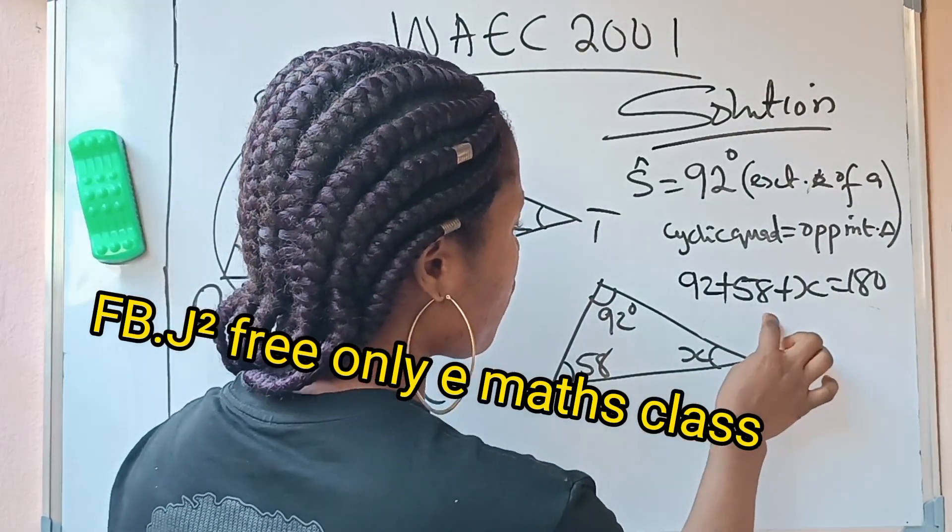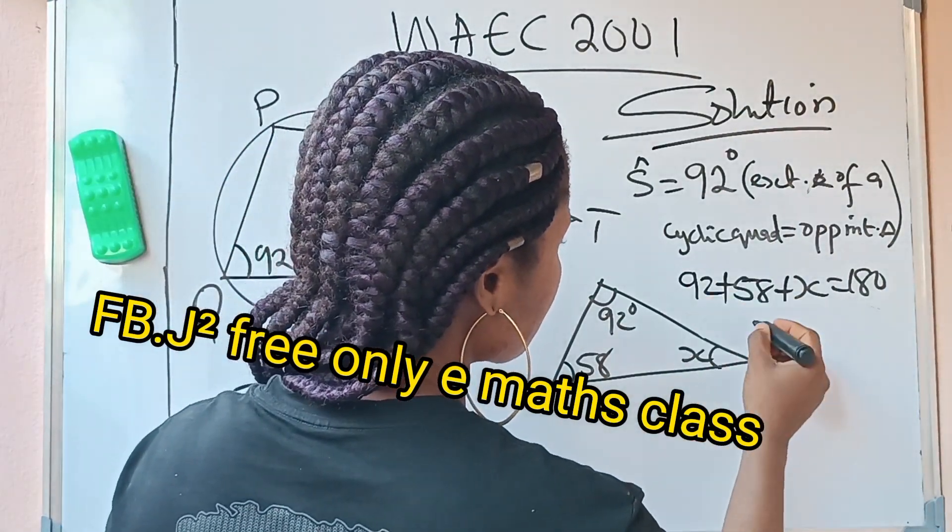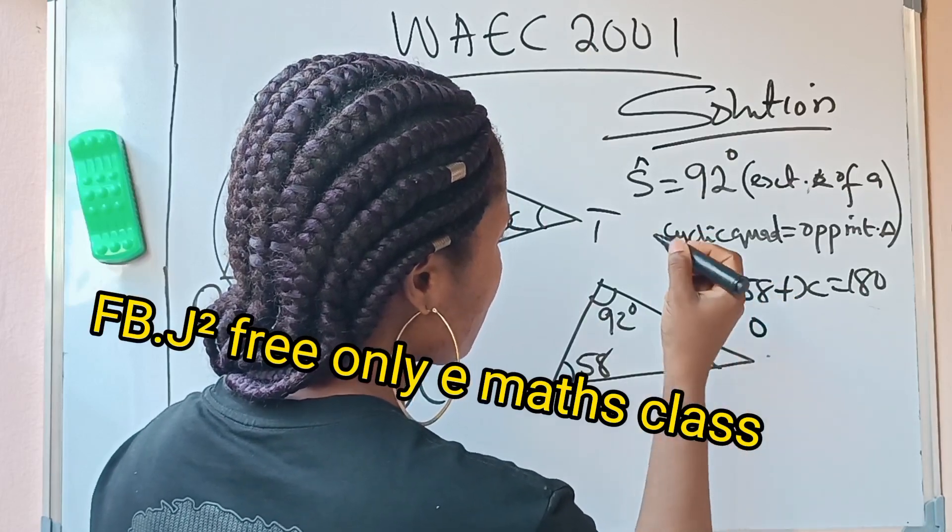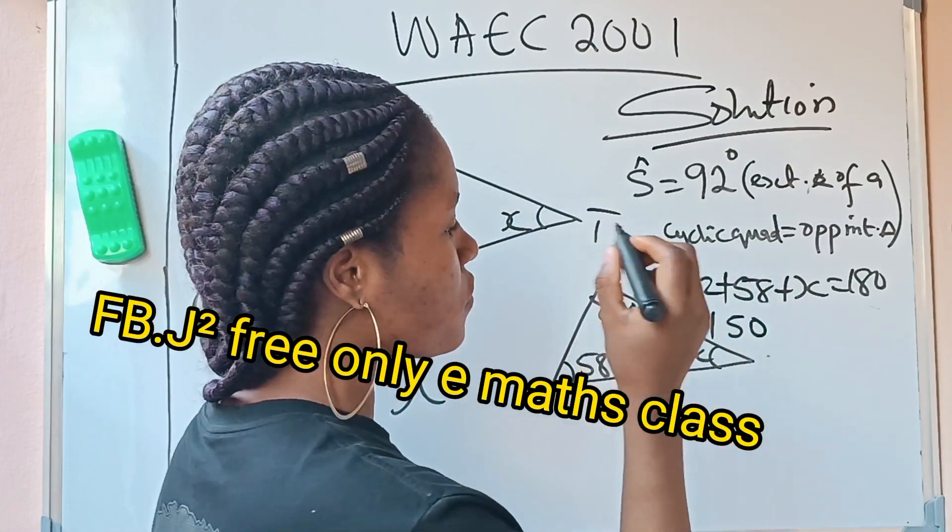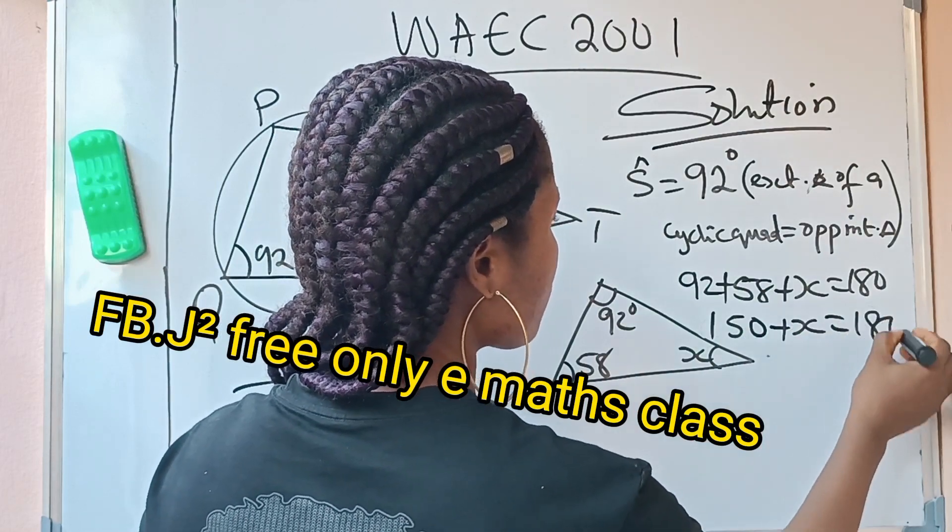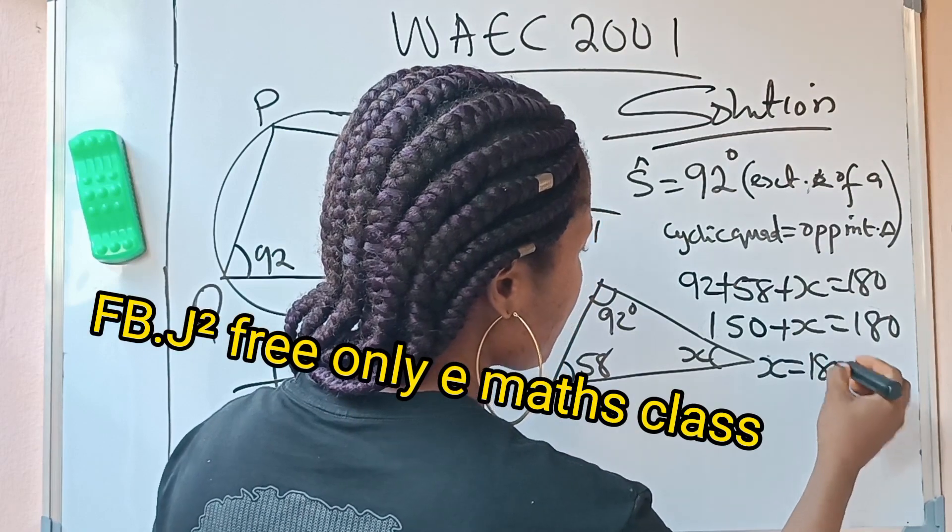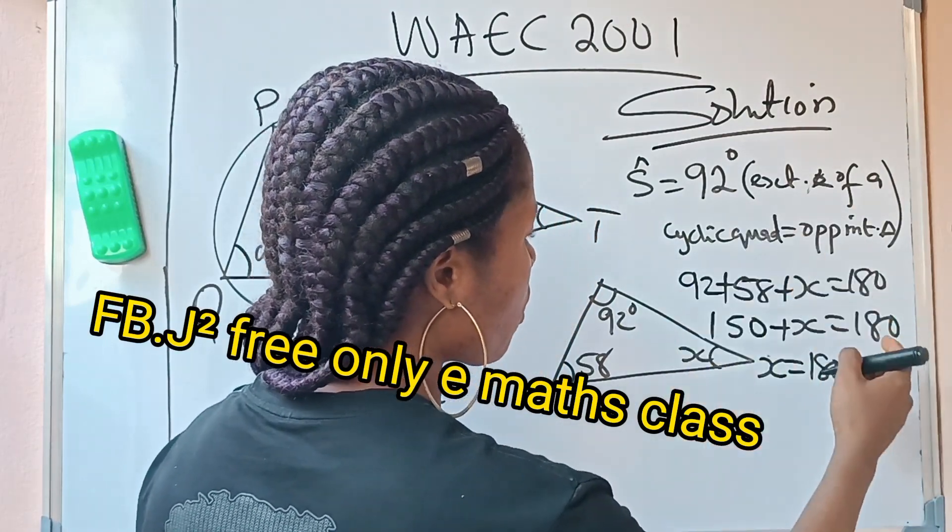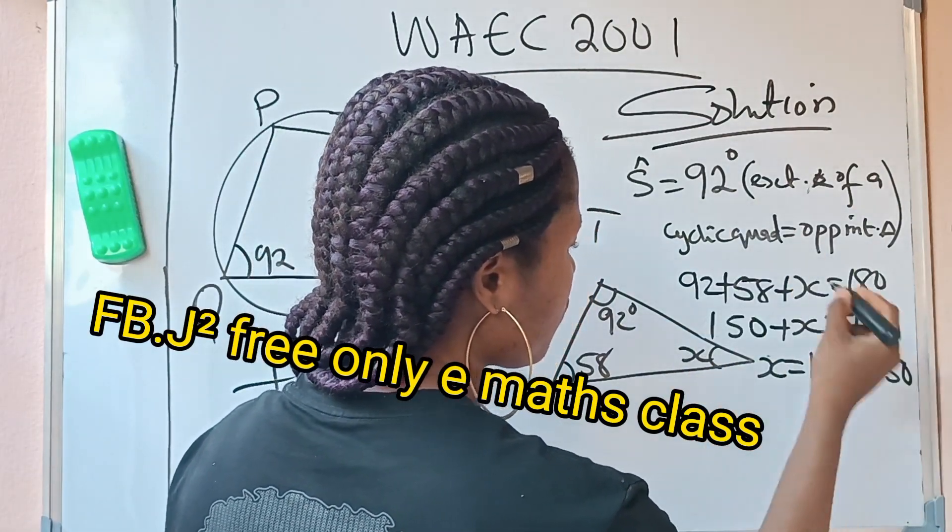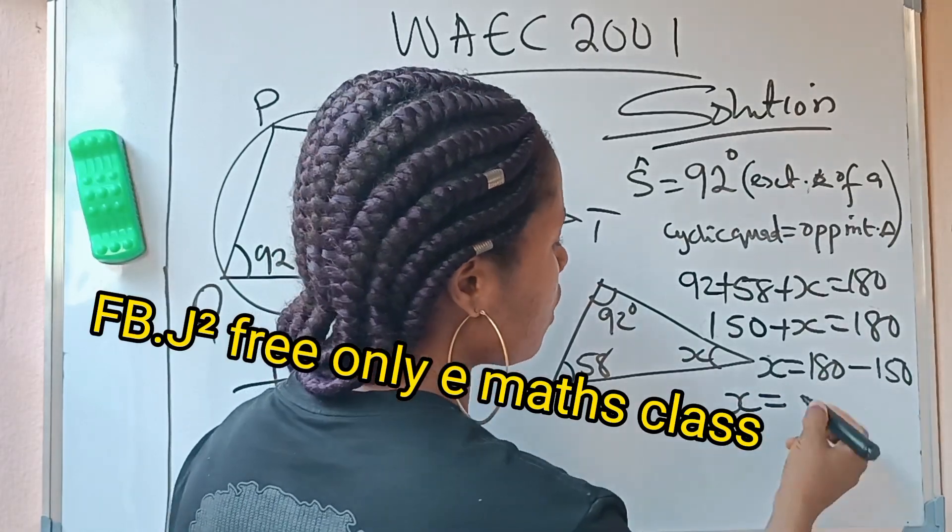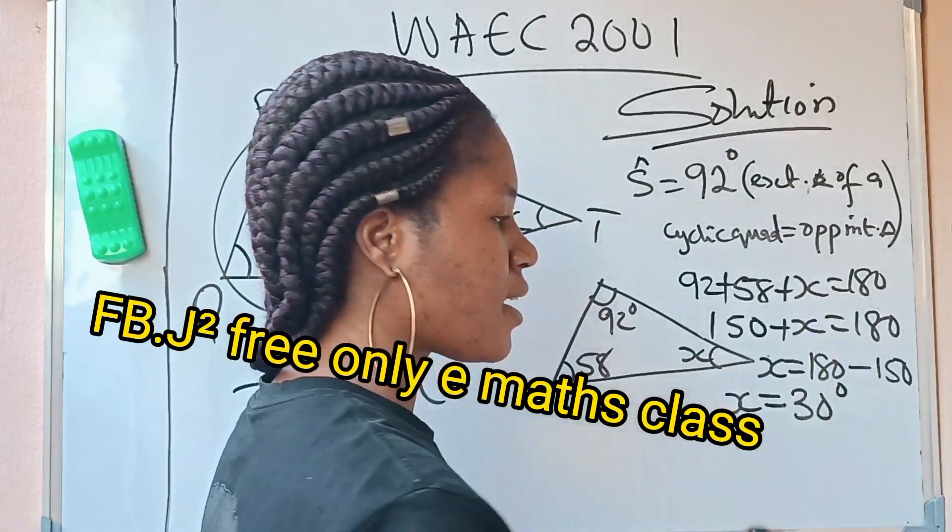So 92 plus 58, 8 plus 2 is 10, carry 1. Put it here to be 6. 6 plus 9 is 15. So I have 150. 150 plus X is equal to 180. And that means that our X is equal to 180. This 150 will cross over to become minus 150. So our X becomes equal to 180 minus 150, which will give us 30 degrees.